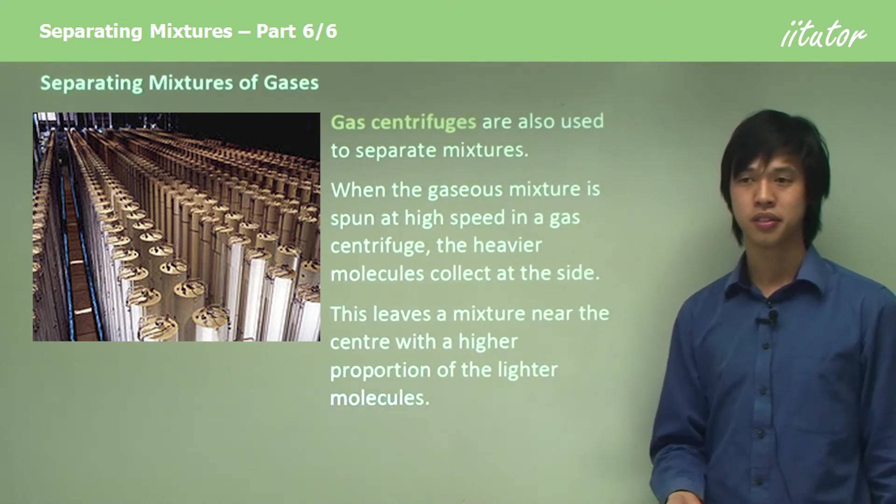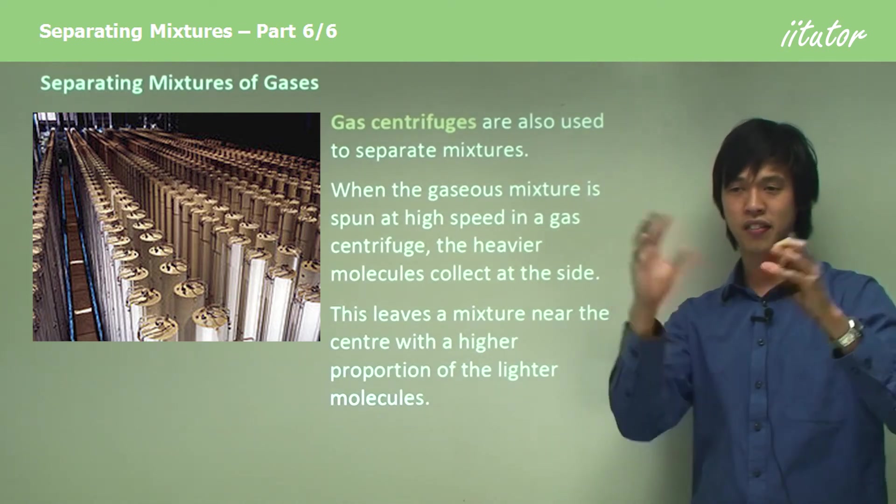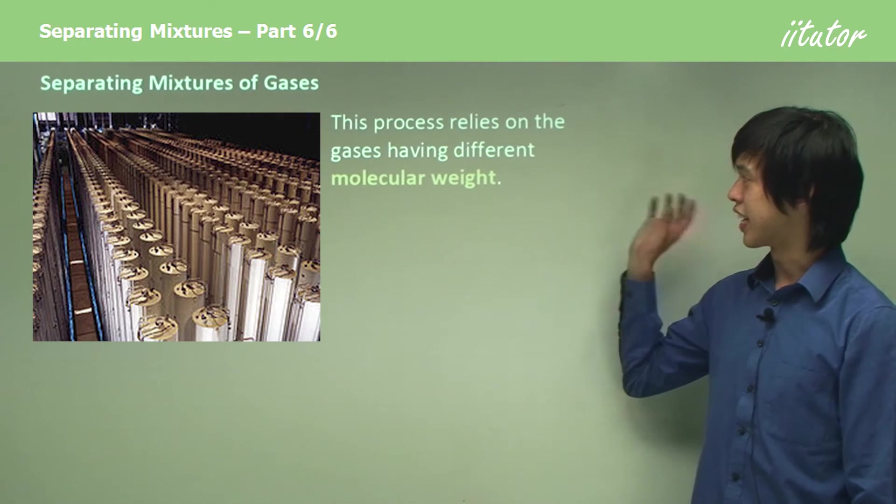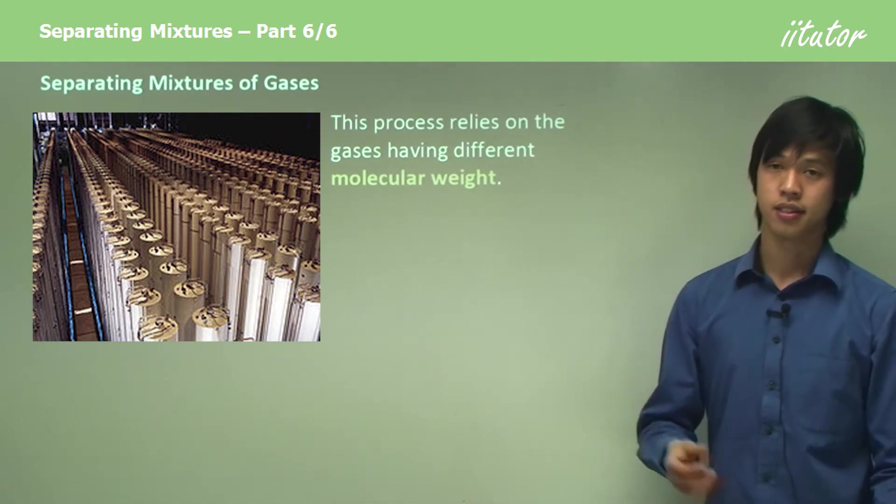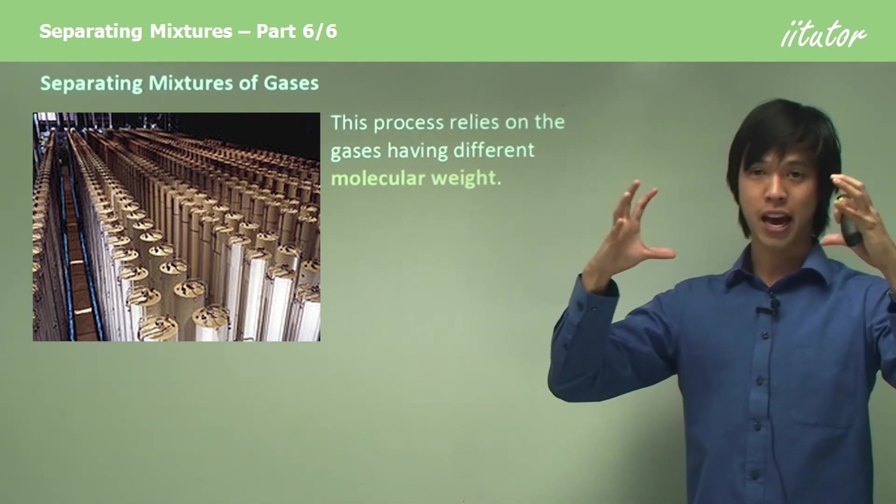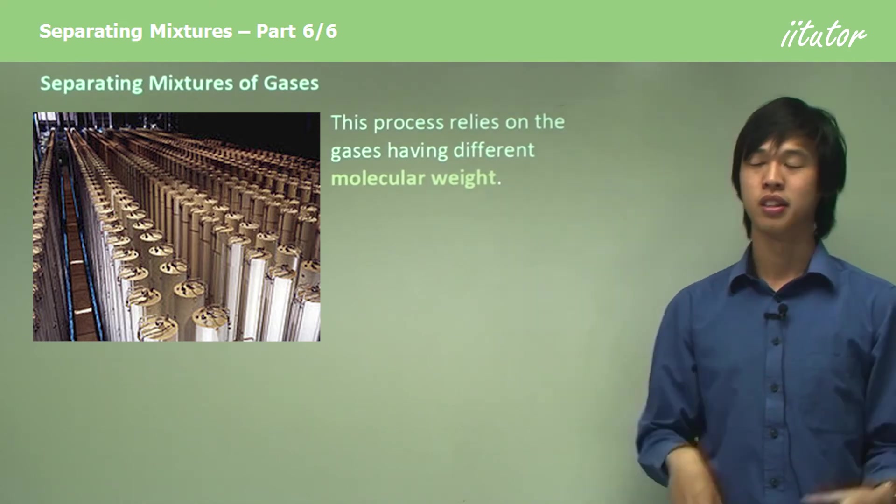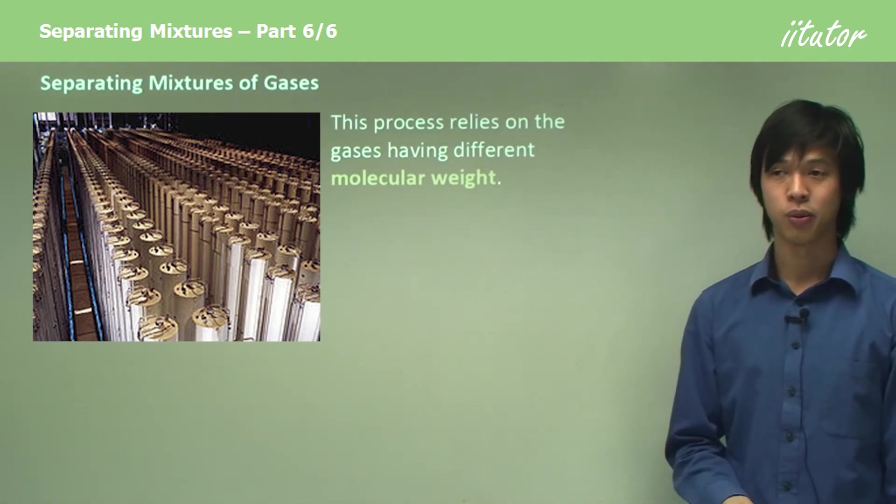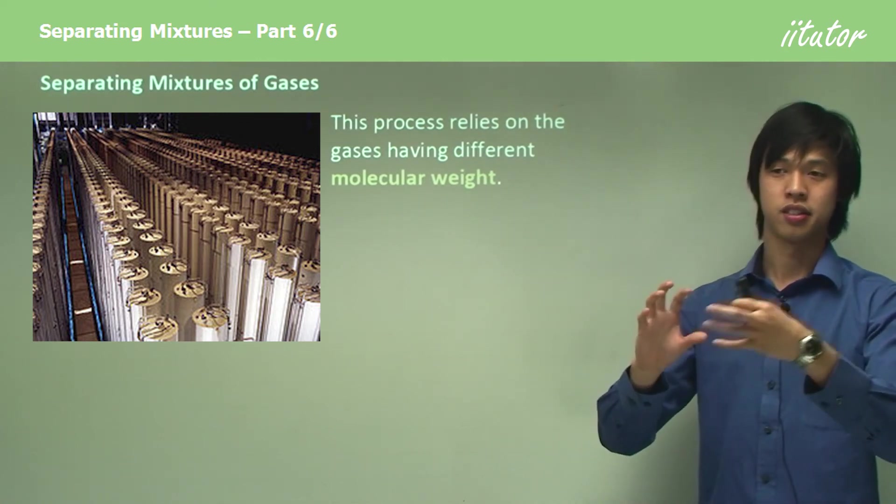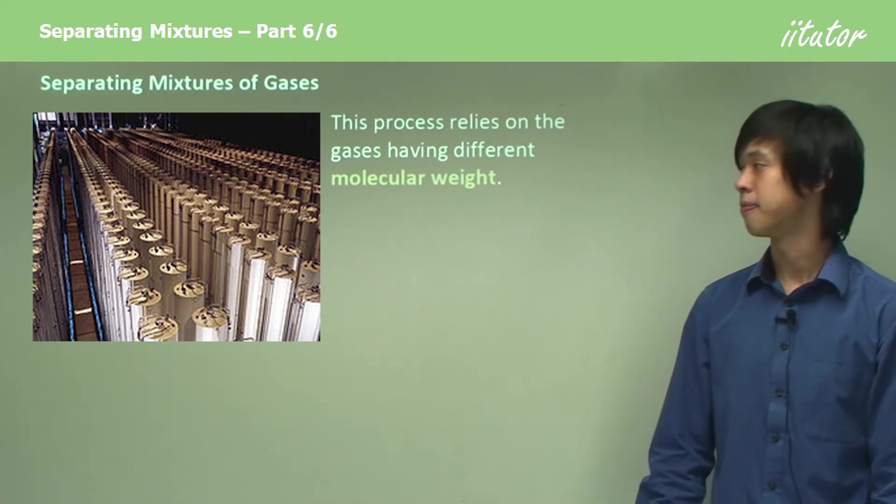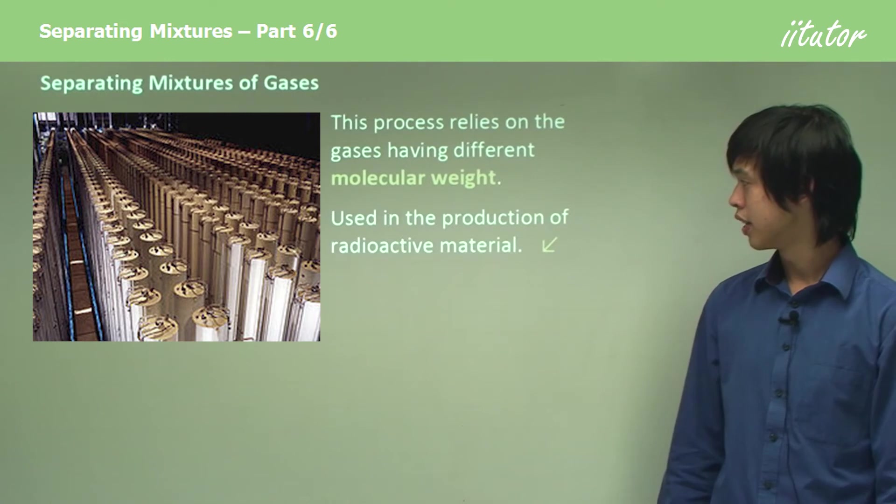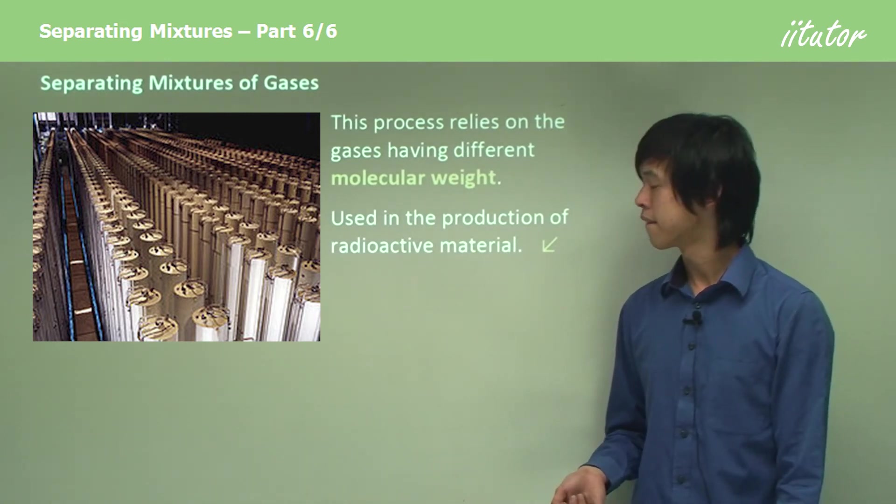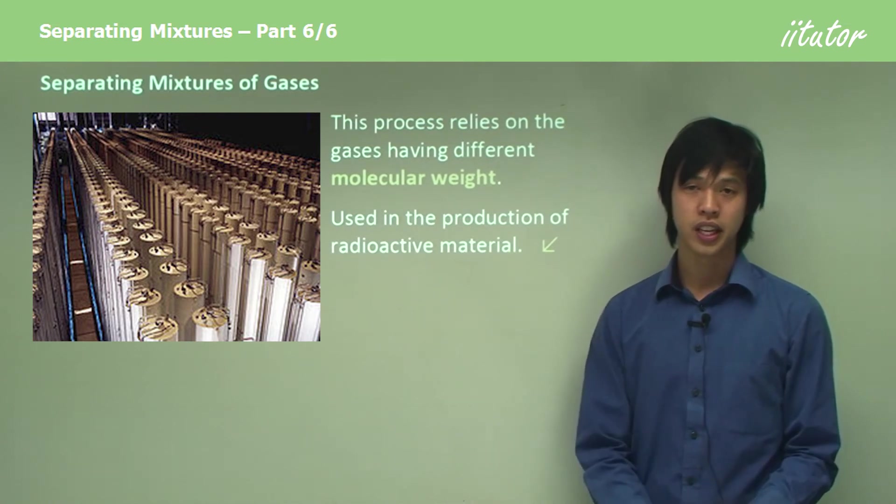This leaves a mixture near the center with a higher proportion of light molecules—light molecules in the middle, heavy molecules on the outside. This process relies on gases having different molecular weights. The molecular mass of each molecule is the property we're exploiting. We use this in the production of some radioactive materials.